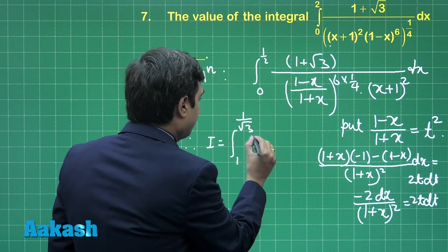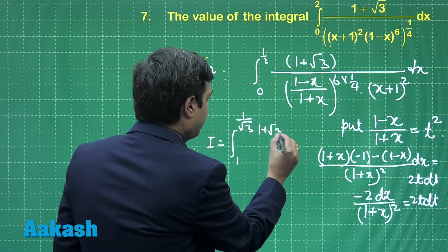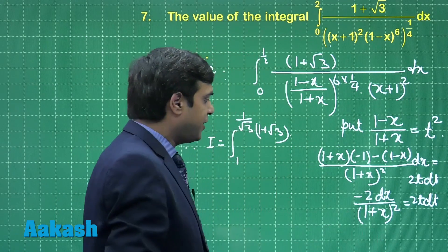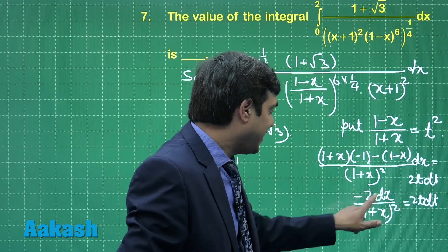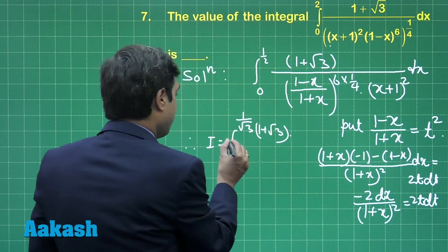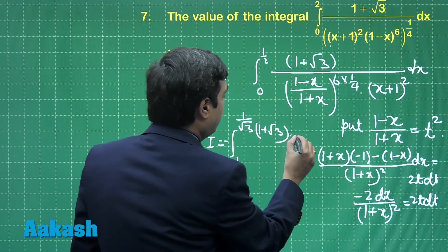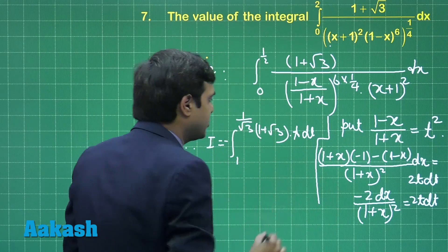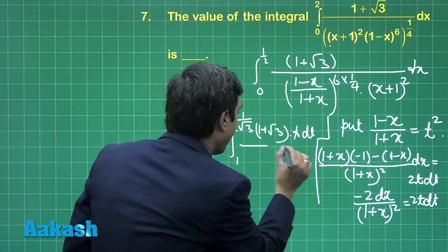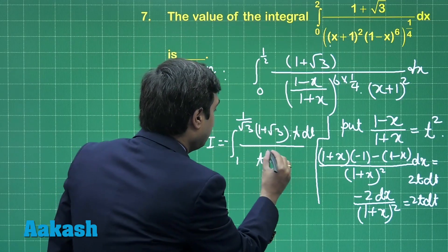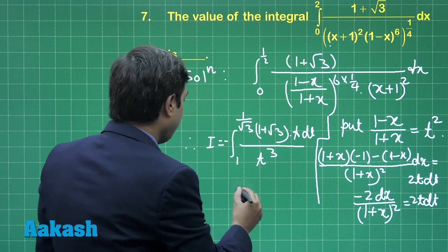1 plus root 3 is already there multiplied. For dx we can write here t dt because dx upon (1 plus x) whole square entire term would be cancelled out. So take the minus sign outside, we have t dt. Let us draw a line here just to separate, divided by this term meaning t cube, so simply we are left with